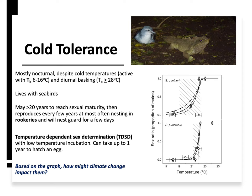They live in a cold place and are also nocturnal, meaning they're exposed to quite low temperatures and are active during the coldest part of the day, spending their day basking to recover body heat. They live in places along the coast, often within seabird colonies, which is both a ready food source for the tuataras and a constant predator threat for the seabirds — they eat their eggs and so on.